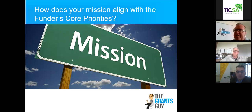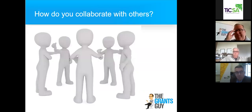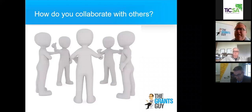How does your mission align with the funding body's core priorities? What they're trying to achieve is what you're trying to achieve — it's not you and me, it's the 'we.' We're in this together for what we want to achieve for tourism in South Australia. How do you collaborate with others? How do you play nicely with everyone else in the tourism sector? I want to see that you have partnership arrangements with hoteliers, restaurateurs, tourism transport providers — you circle the wagons in your own demographic and geographic area.